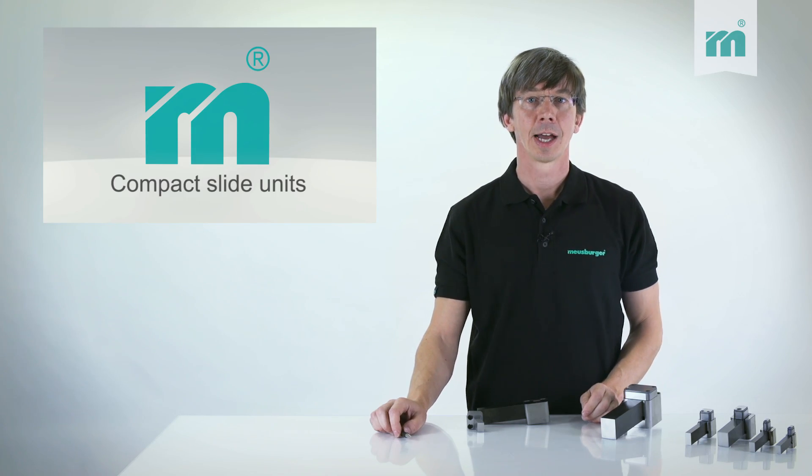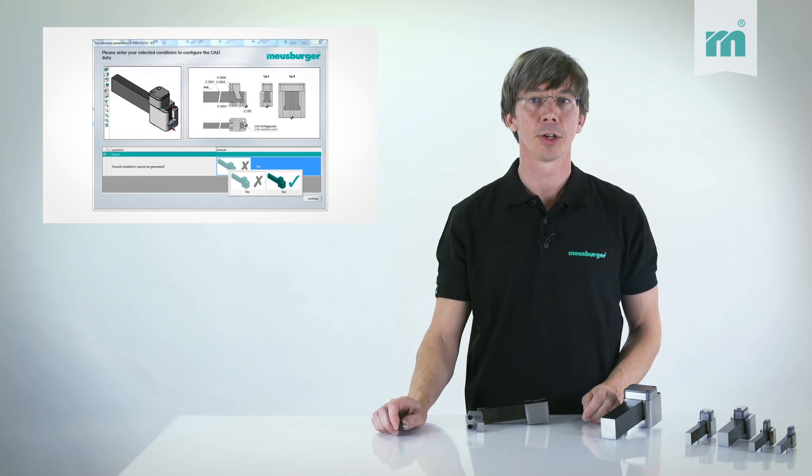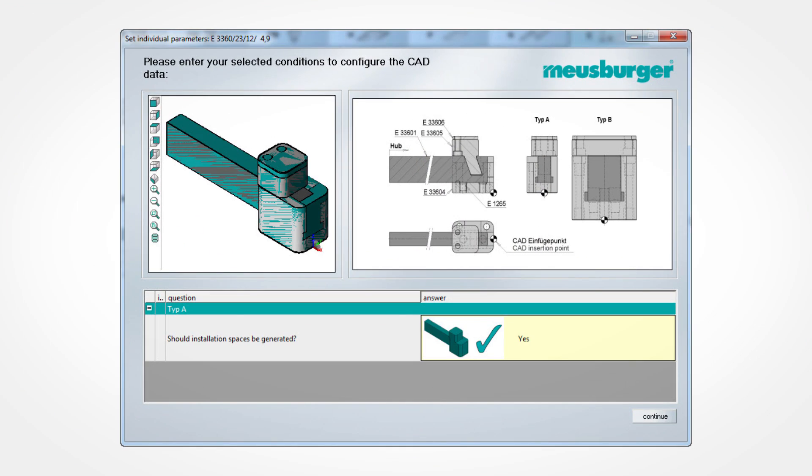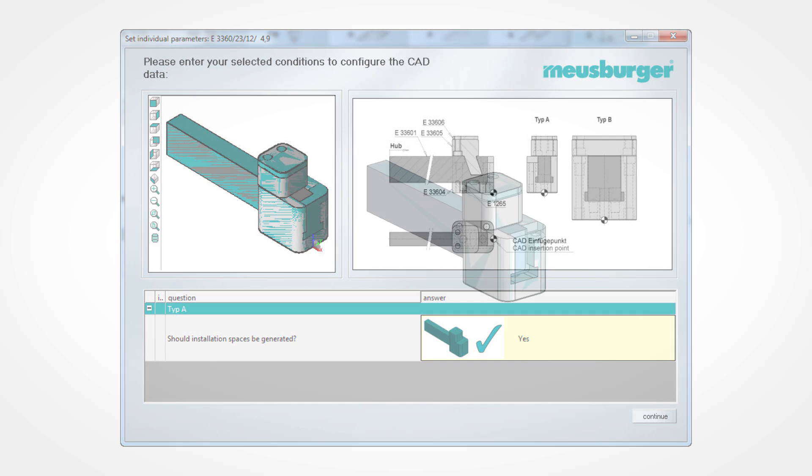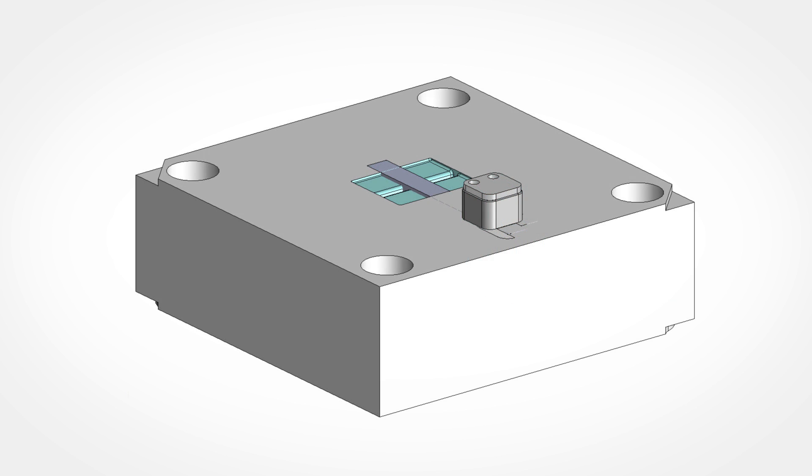For the design, the CAD data of the assembly group including installation space is available in the Moyesburger online shop. Thereby the compact slide unit can be integrated in the mold with just a few mouse clicks.